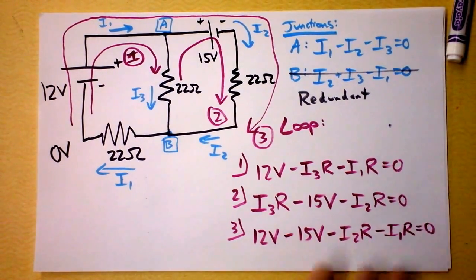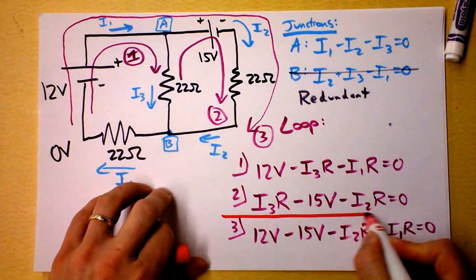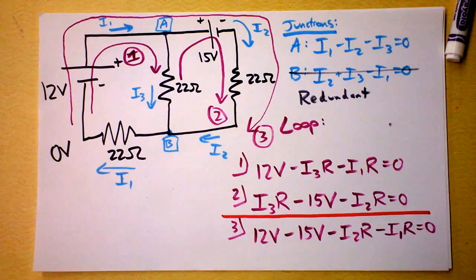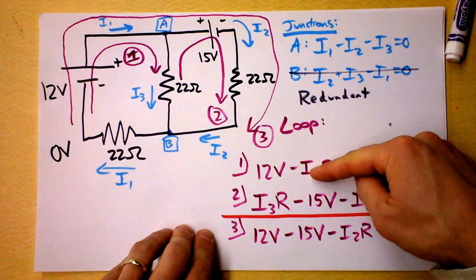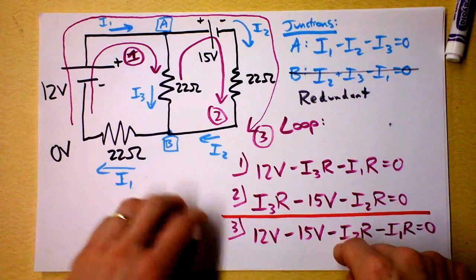I'd like you to notice something. This is equal to 0. I'm going to draw a line right here. And I want to point out what's going on. If you take this equation and add this equation, you actually get this equation right here.